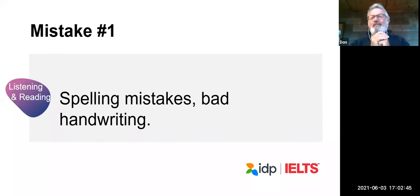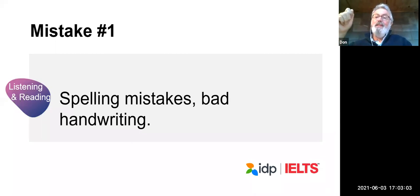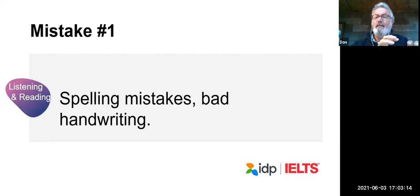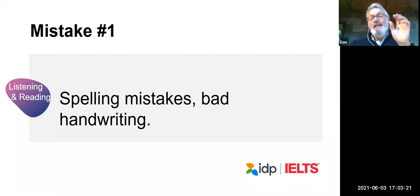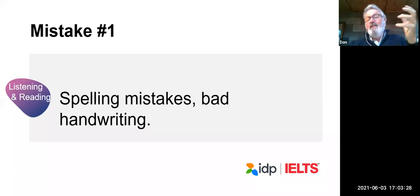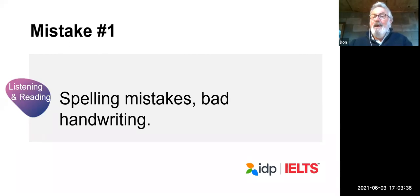The first mistake is a very obvious one. When you are doing your listening or reading test, you have to write your answer. There are two problems. Sometimes we make simple spelling mistakes. If you make a spelling mistake on your mark sheet in the paper and pencil test, or on the computer test, that answer will be marked wrong — even if it's clear what you meant. For example, if you write 'circle' with an S instead of a C, that would be marked as wrong.